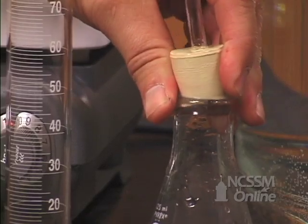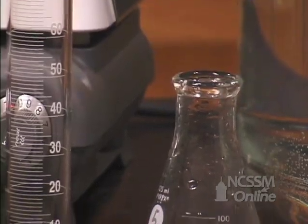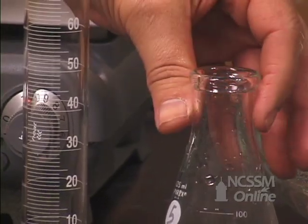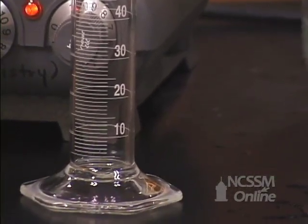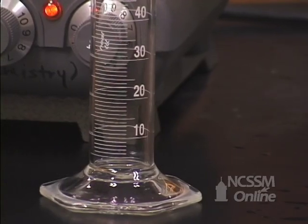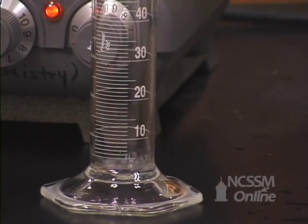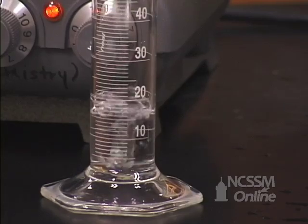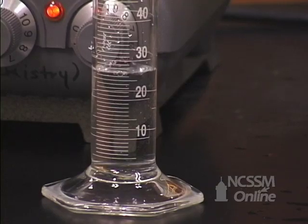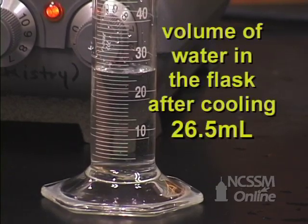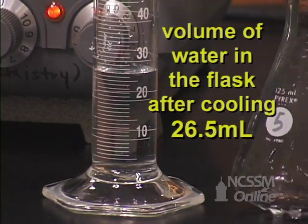We will carefully remove the rubber stopper from the flask and pour the water into a graduated cylinder. The volume of the water in the cylinder is 26.5 milliliters.